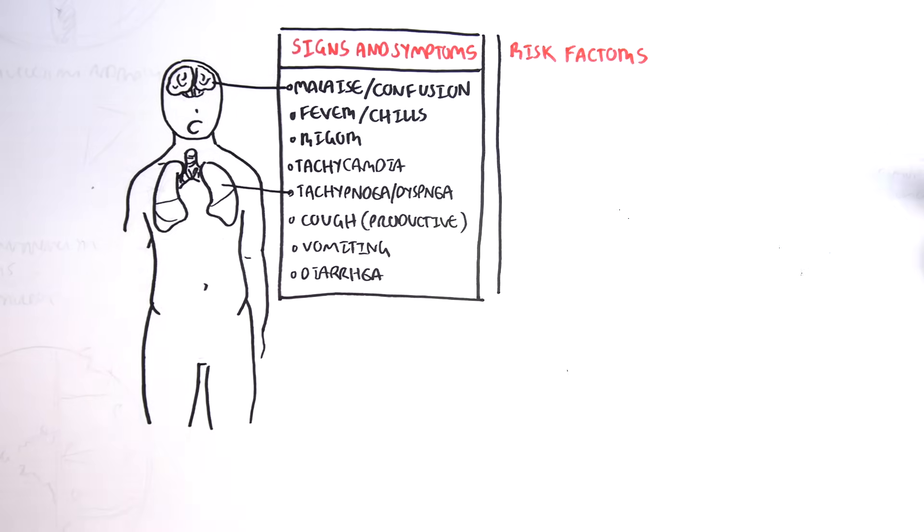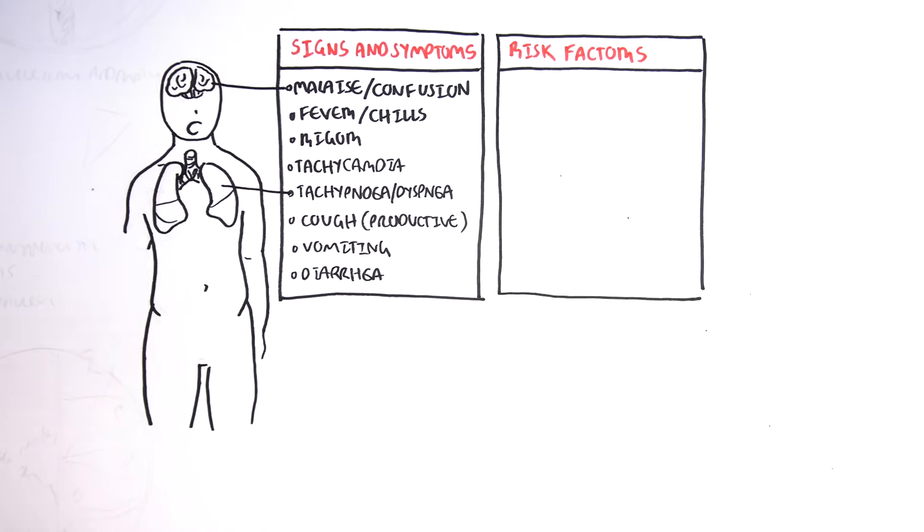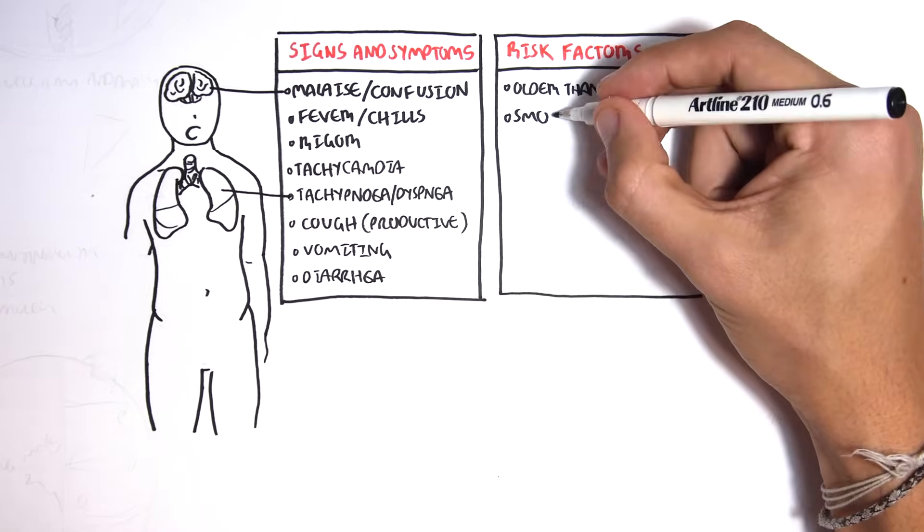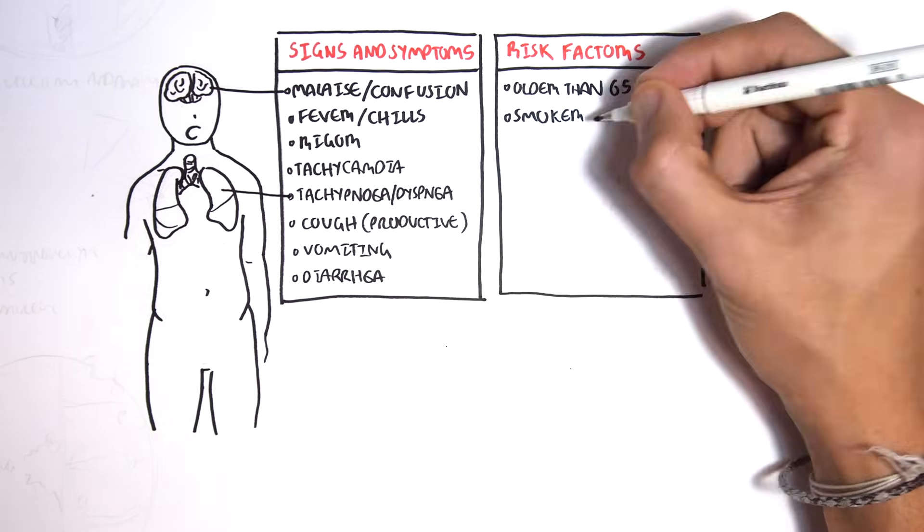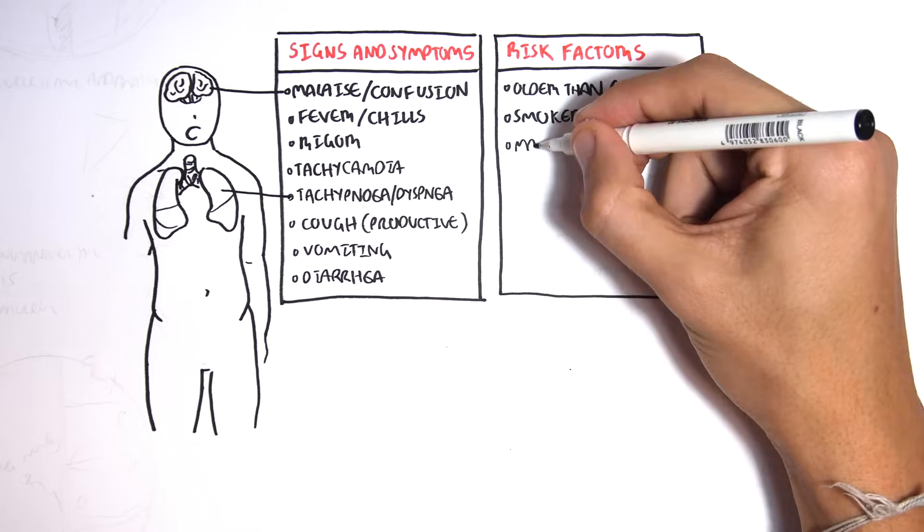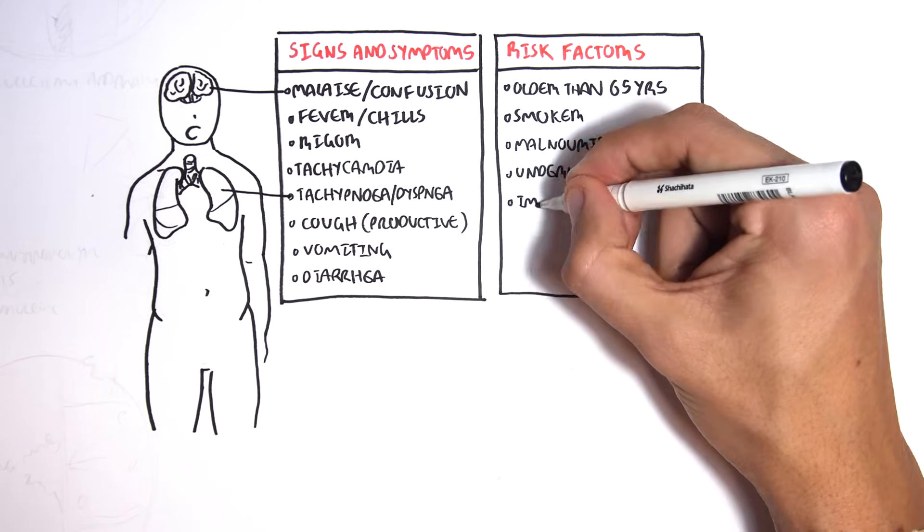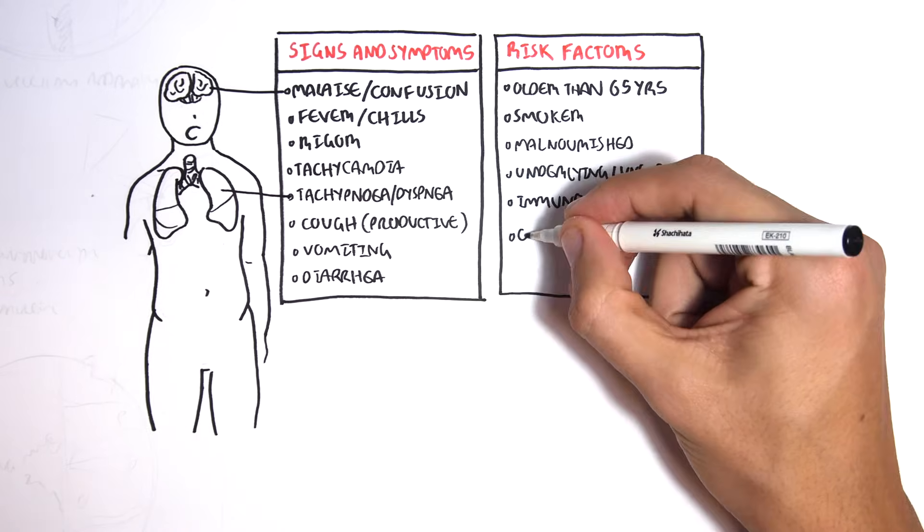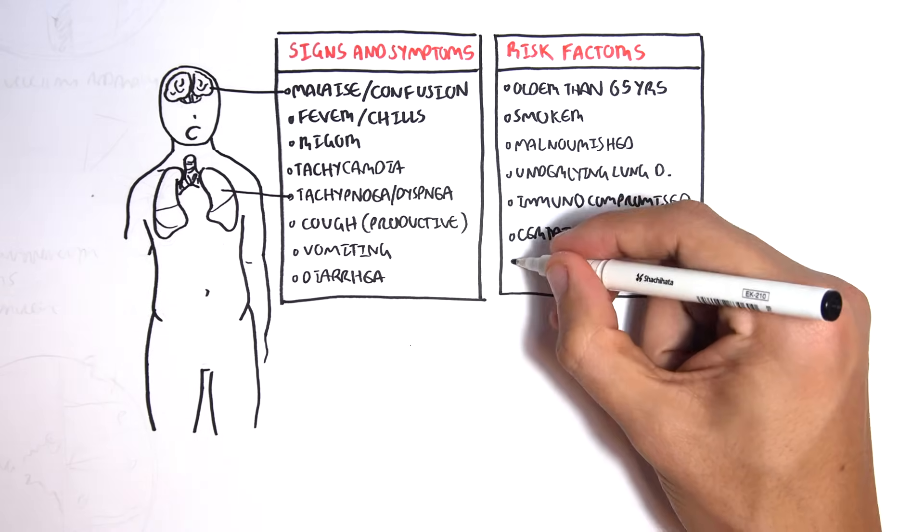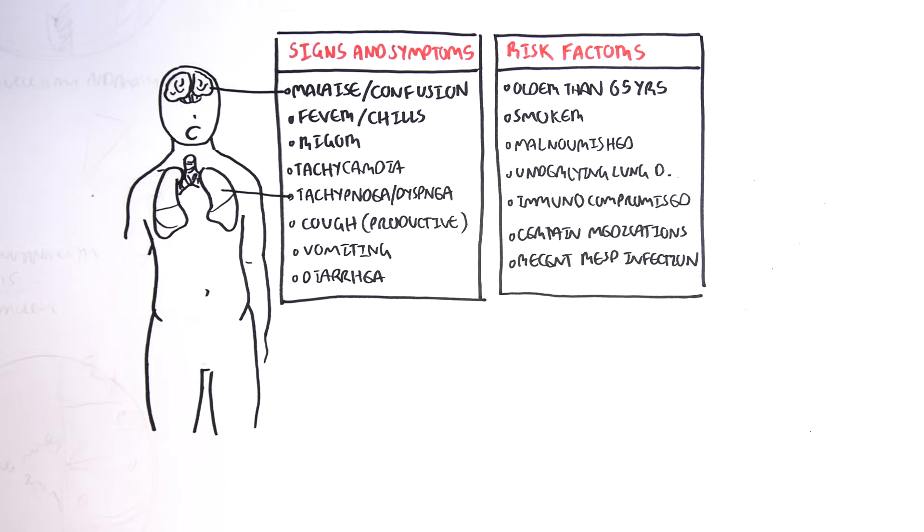Risk factors for pneumonia are patients or people older than 65 years of age, smokers, being malnourished, having an underlying lung disease, being immunocompromised. Certain medications contribute to pneumonia, as well as a recent respiratory infection.